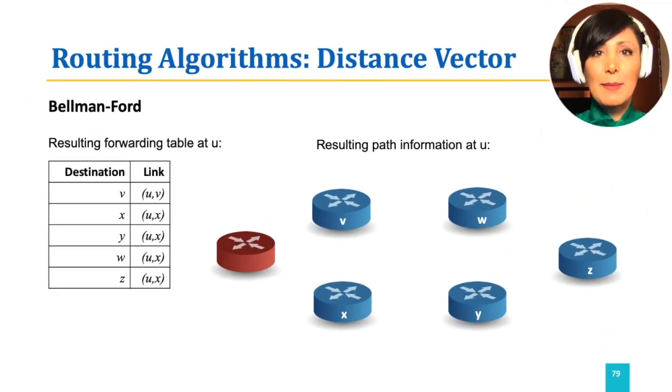The resulting forwarding table at node u will have the destinations in the network, with the next hop or the first link to take to reach that destination.